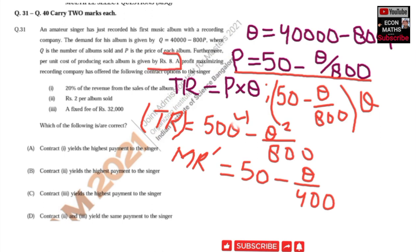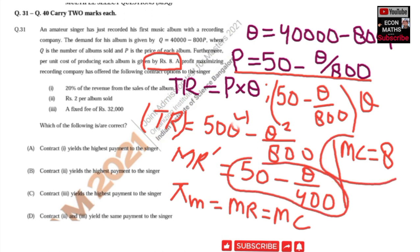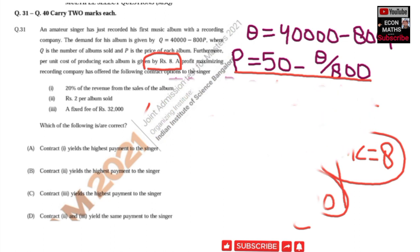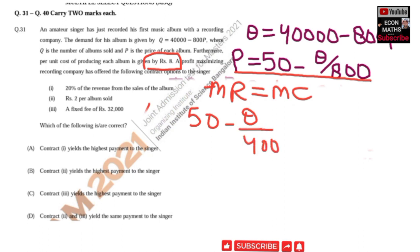The question tells us the cost of producing each album is rupees 8, so marginal cost MC = 8. The profit maximization condition requires marginal revenue equal to marginal cost. Setting MR = MC: 50 − Q/400 = 8.